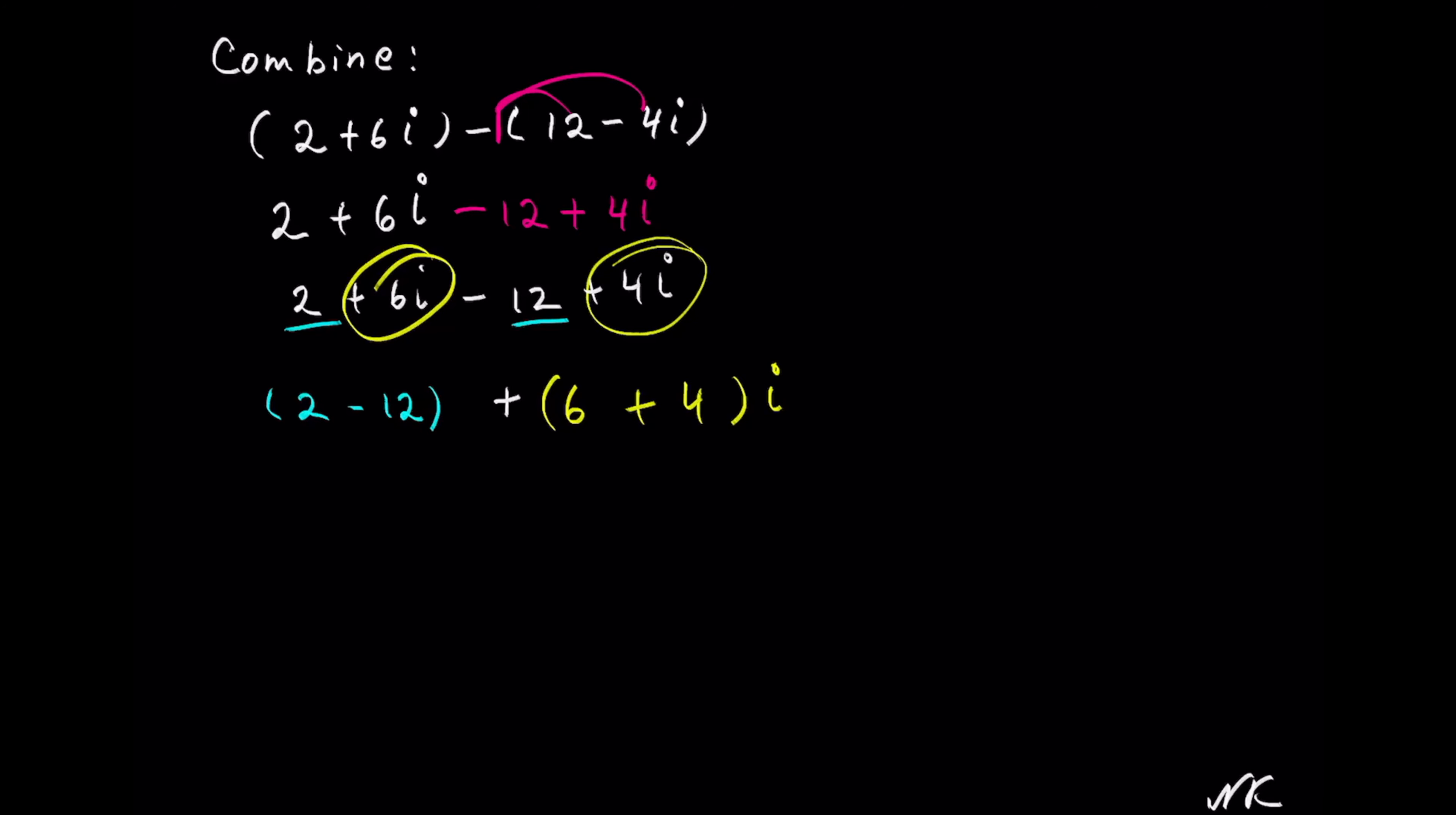This will give us 2 minus 12. We have more negatives, so the difference will be negative. And the difference between 2 and 12 is 10. So we have negative 10 plus 6 plus 4i. We get 10i.